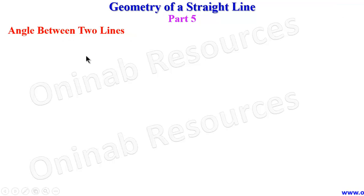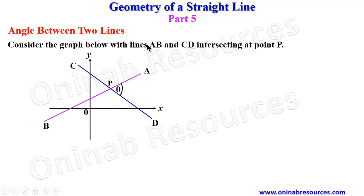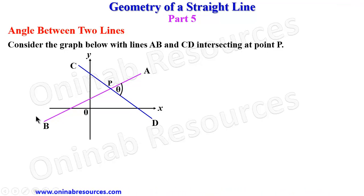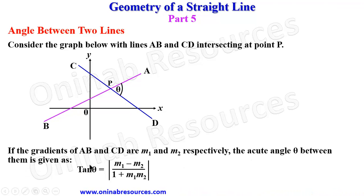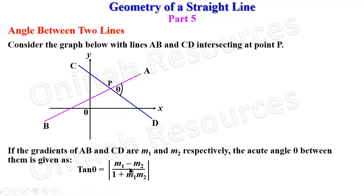Consider the graph below with lines AB and CD intersecting at point P. We have line AB and line CD intersecting at point P, and the acute angle there is named theta. If the gradients of AB and CD are m1 and m2 respectively, the acute angle theta between them is given as: tan theta equals the absolute value of m1 minus m2 over 1 plus m1 times m2.